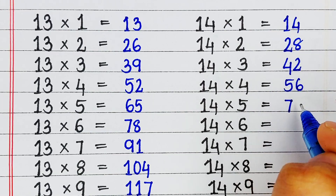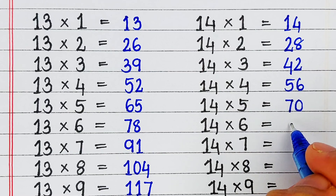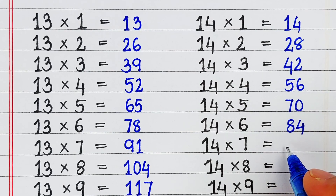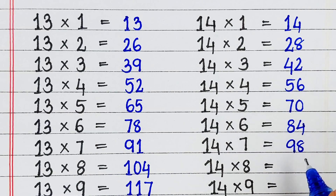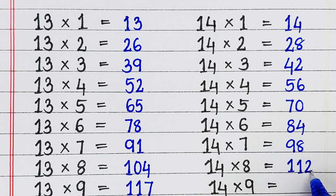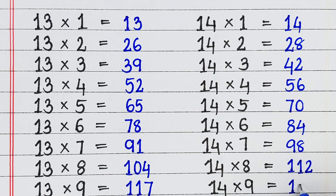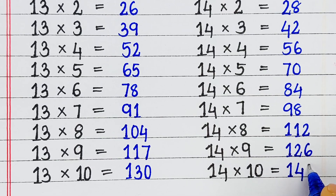Next is the table of 14. 14 8s are 112, 14 9s are 126, 14 10s are 140.